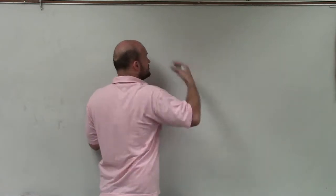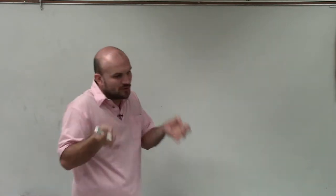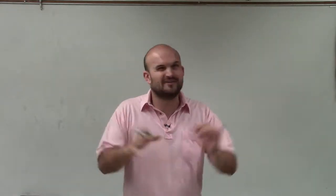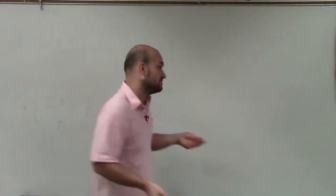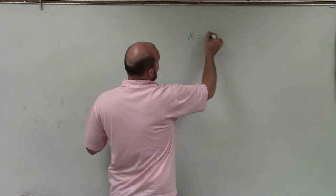So when we're solving equations, the main important thing that we want to be thinking about is trying to get that variable alone, right? The variable's not a people person. It wants to be by itself. And we want to get it by itself on one of the sides of the equal signs. So you can see an equation, x equals 3.